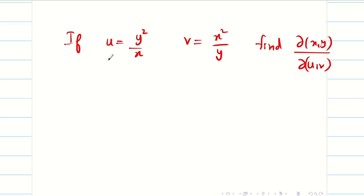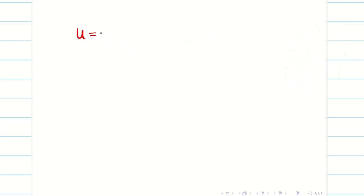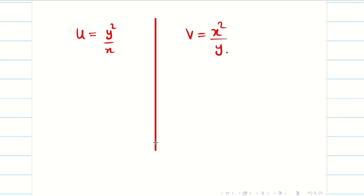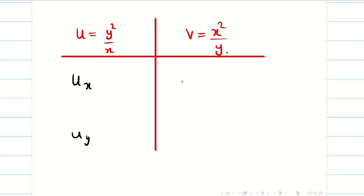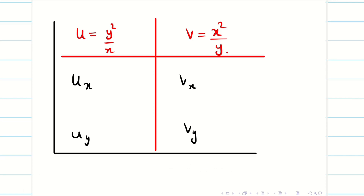We should not worry about whatever they give — just focus on what we can find, then match with the question. From the given problem, u = y²/x and v = x²/y. Now make the table. Once you find ux, uy, vx, vy, we can easily get the Jacobian. We know the basic differentiation formulas discussed in class earlier.